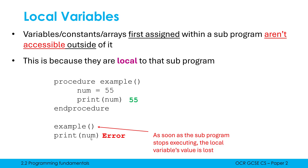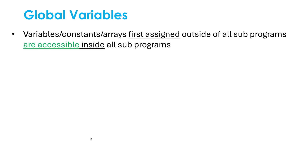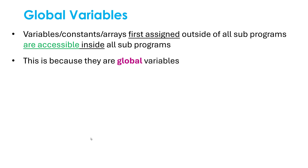These contrast with global variables — which are variables, but also constants or arrays — which are first assigned outside of all subprograms. Now they are accessible inside all subprograms. They're available everywhere. That's why they're said to be global.